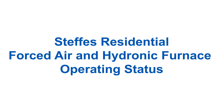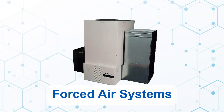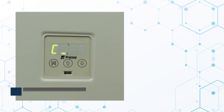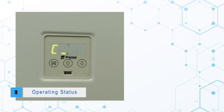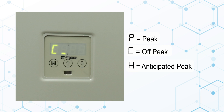Steffes Residential Forced Air and Hydronic Heating Systems are programmed to have various operating information accessible through the display. The normal operating display on a residential forced air system will show the current peak mode status. P indicates the system is in a peak period, C indicates a charge period, and an A indicates an anticipated peak period, if applicable.